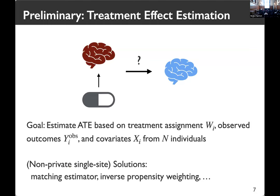On top of those difficulties, the goal is to estimate ATE from individual data, where each data point consists of treatment assignment, observed outcome, and covariates. Existing solutions include the matching estimator and inverse propensity weighting. However, these solutions are for single-site ATE estimation without careful privacy consideration. In this work, we aim to carry out multi-site estimation with a privacy guarantee.